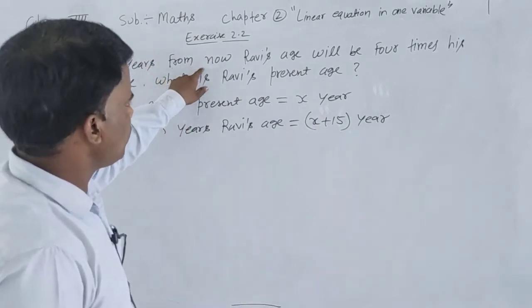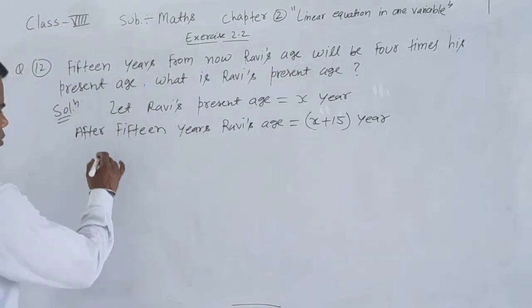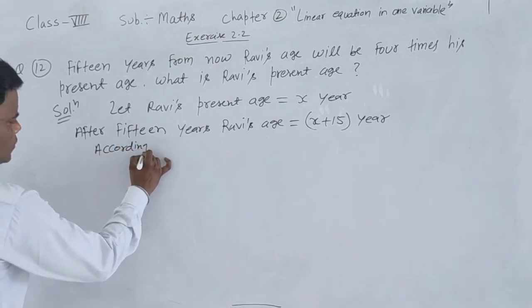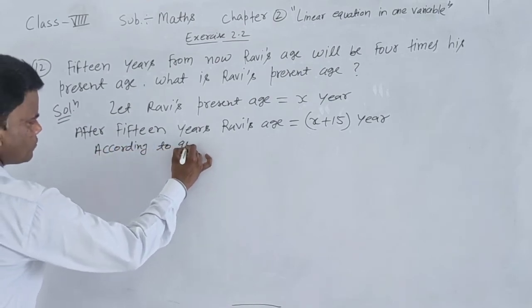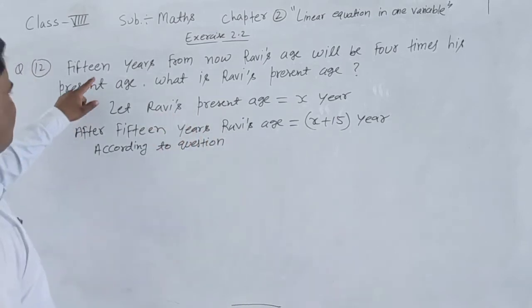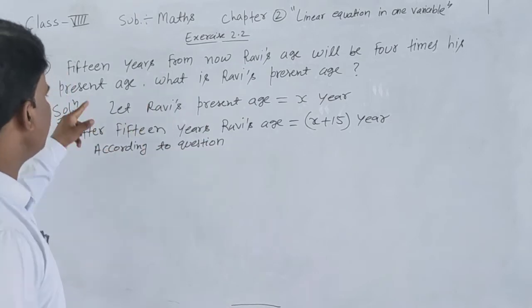15 years from now, 15 years from now. According to the question, according to the question, 15 years from now Ravi's age will be 4 times his present age.